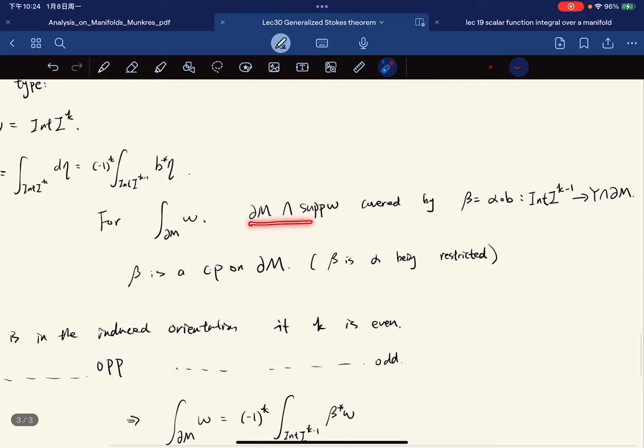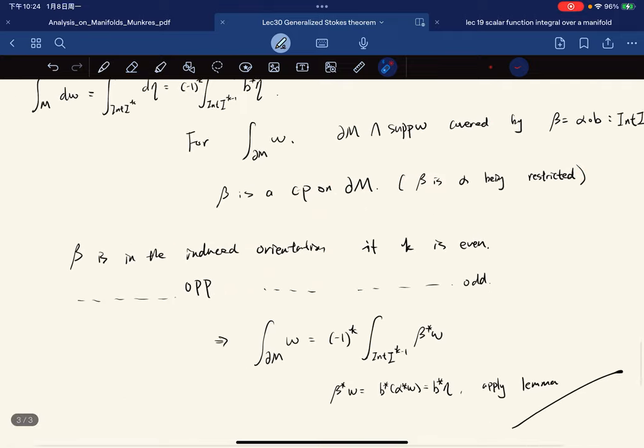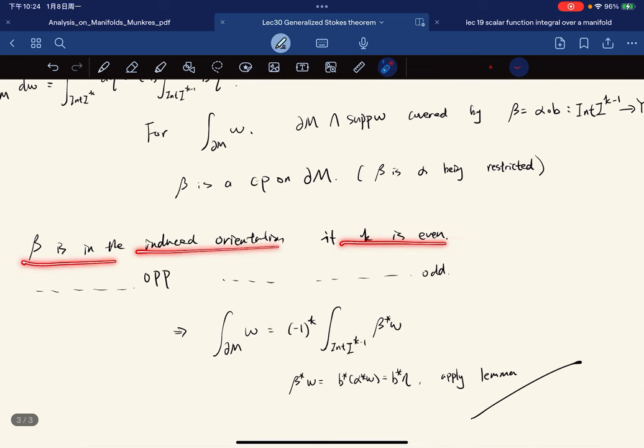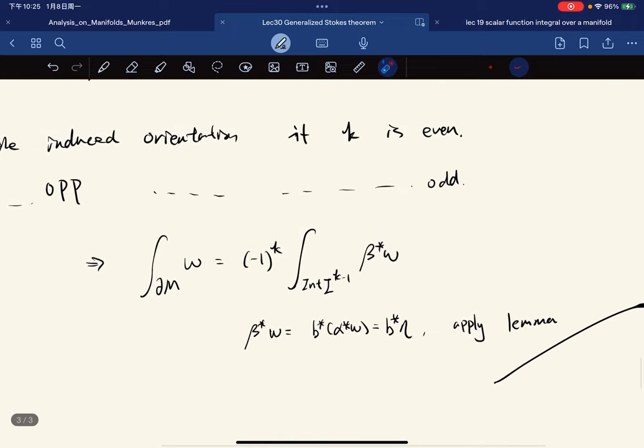And for this, this can be covered by this mapping. So beta is a corner patch on this. Beta is basically the alpha being restricted. So it's a corner patch on this. It's an induced orientation. If k is even opposite, if k is odd. So no matter what, we have this sign.